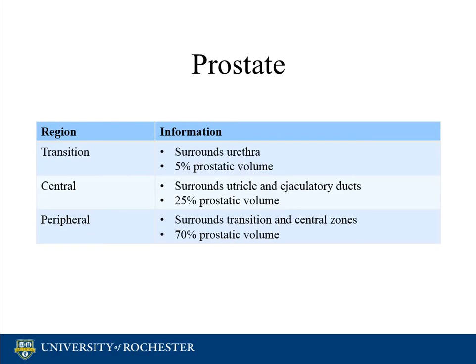The prostate consists of three regions called the transition, central, and peripheral zones. The transition zone surrounds the prostatic urethra, while the central zone surrounds the utricle and ejaculatory ducts. The majority of the prostatic volume, however, is located in the peripheral zone.